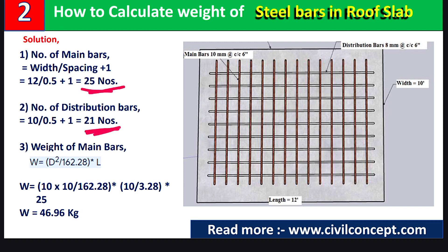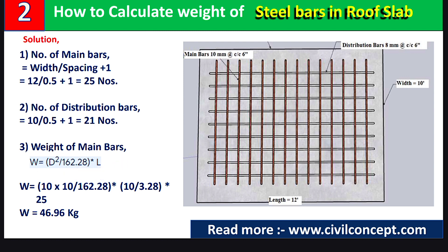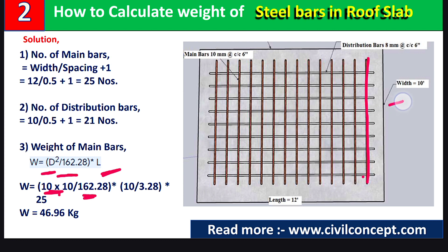In step 3, we calculate the weight of main bars. The formula is: W equals d² divided by 162.25, multiplied by L, where d is the diameter in mm and L is the length in meters. For main bars, d equals 10 mm. The length of the main bars is 10 feet, which we divide by 3.28 to convert to meters.